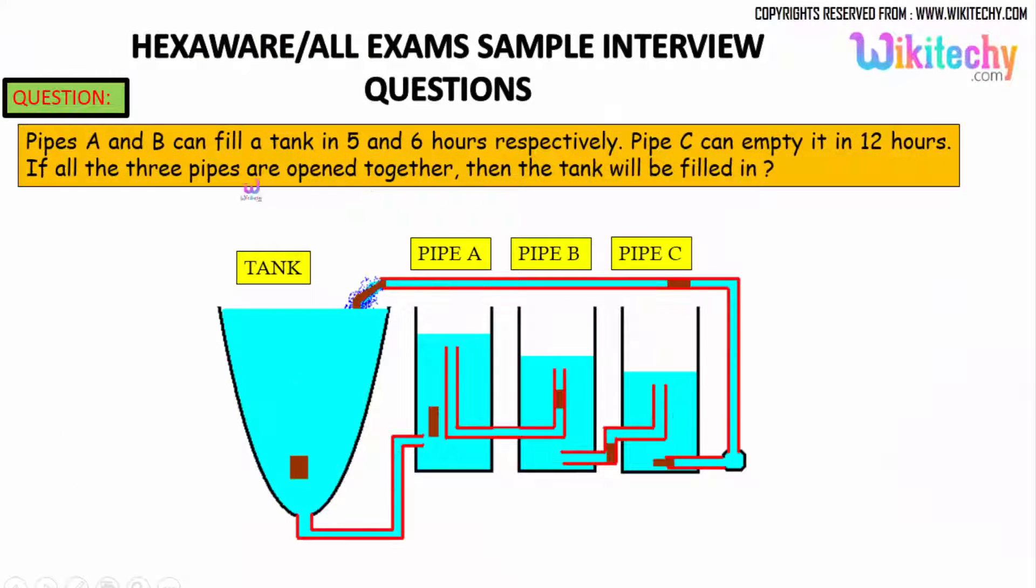See, this is the question. Pipe A and pipe B can fill a tank in 5 and 6 hours. Pipe C is emptying it in 12 hours. These two pipes are filling it and pipe C is emptying it. If all three pipes are opened, then the tank will be filled in how many hours? That is the question.